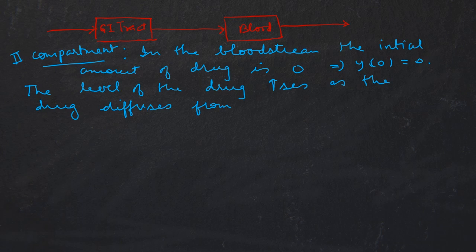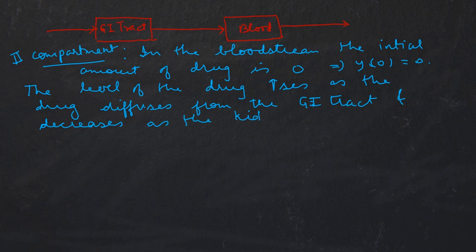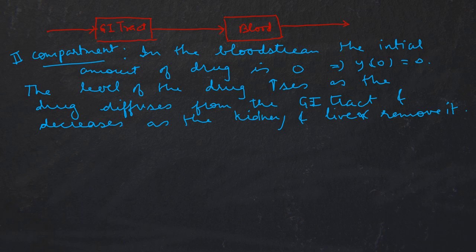The drug level decreases as the kidneys and liver remove it. So what happens in the bloodstream: the drug gets diffused from the GI tract, which increases the concentration of drug in the bloodstream, and then it is removed from the bloodstream through the kidneys and liver, which decreases its concentration.